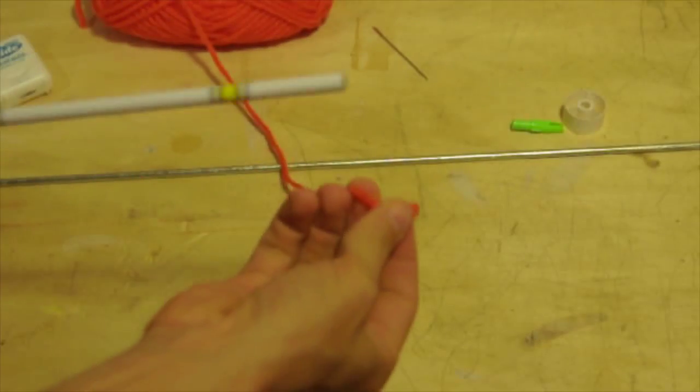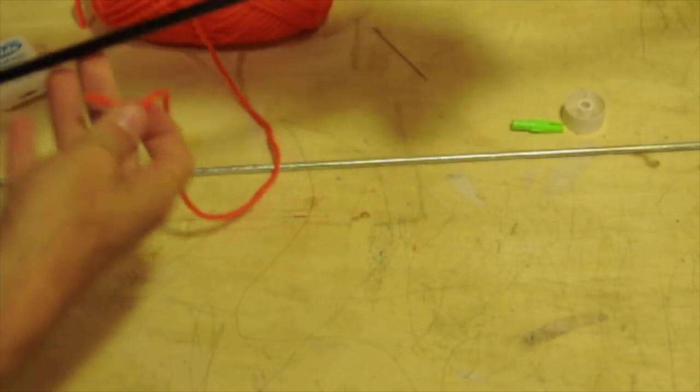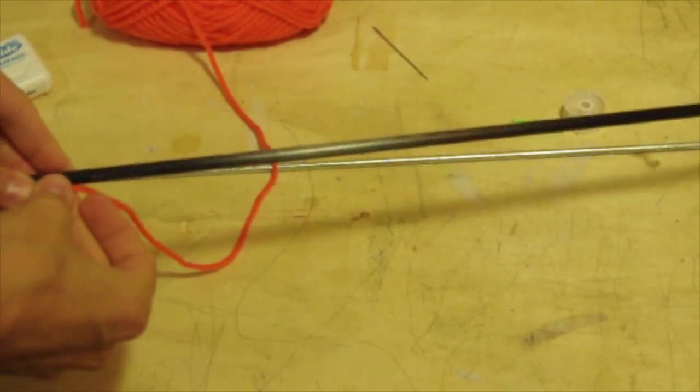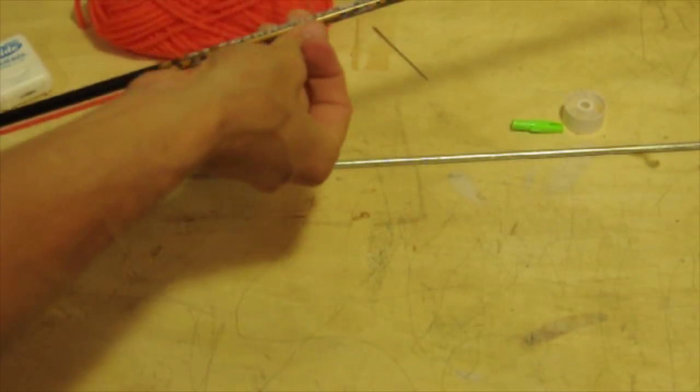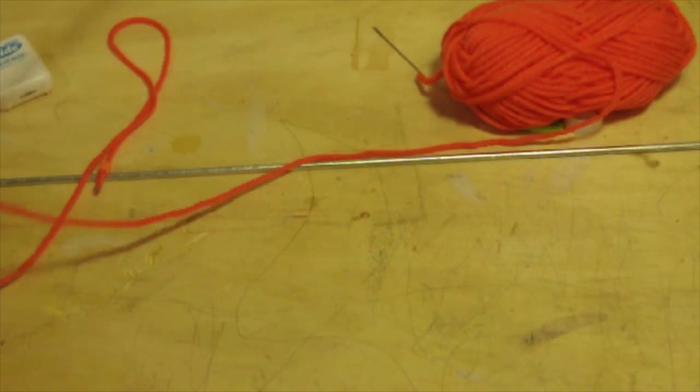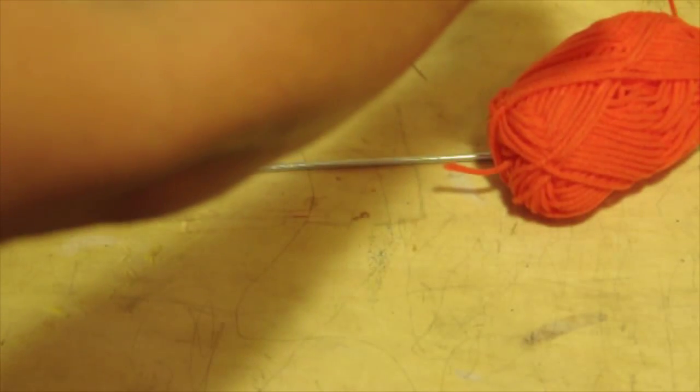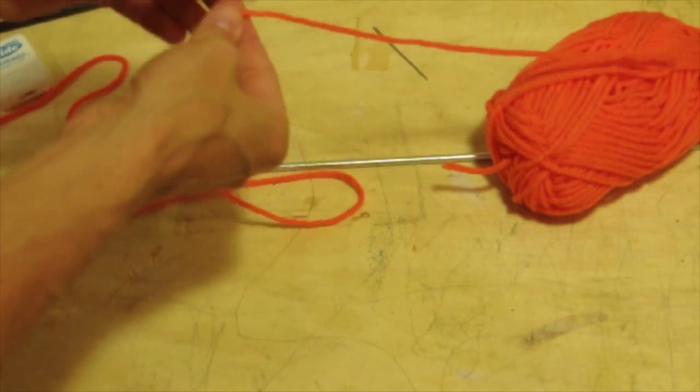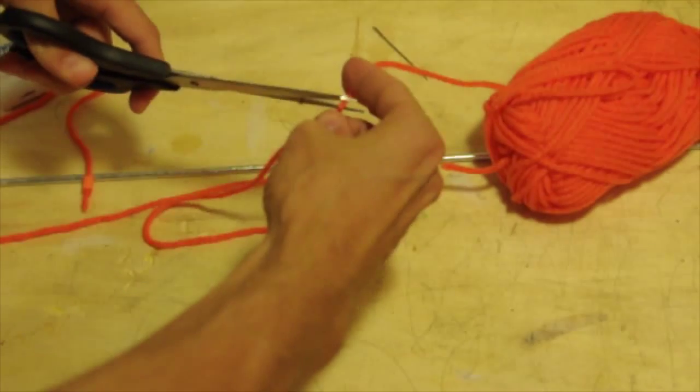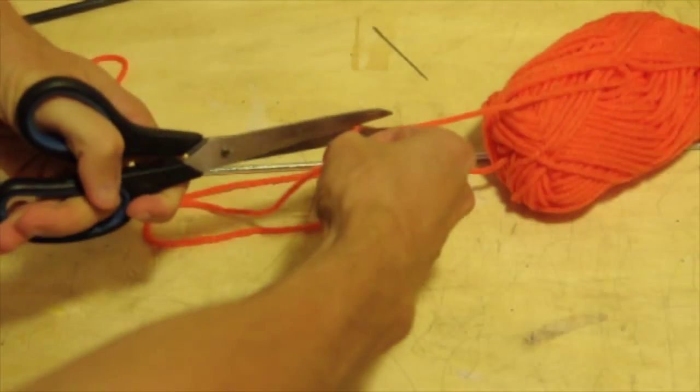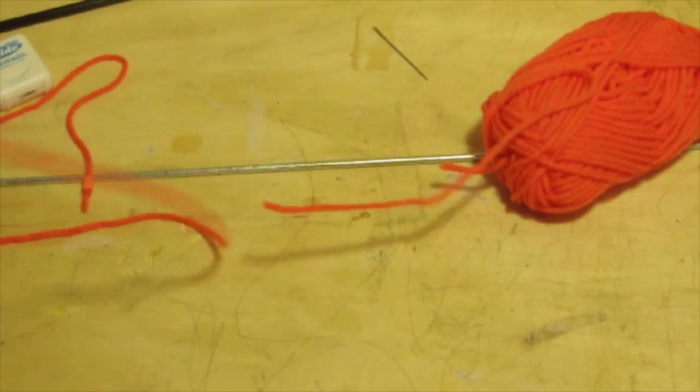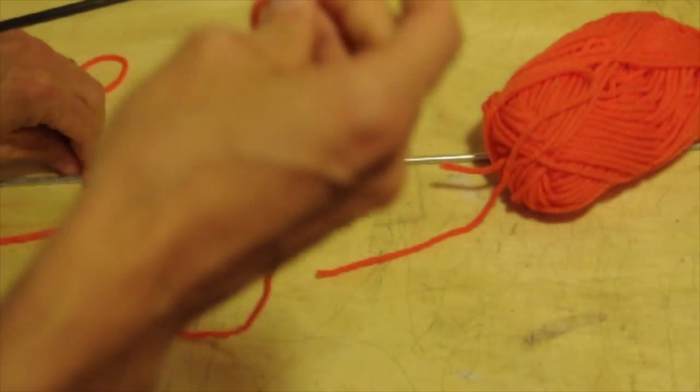So the next step is to measure out your yarn and give it a cut. I do two times the length of my arrow. You don't need much more than that. I've done three before, but three times the length of the arrow is difficult to get all that yarn into the arrow. The harder you have to push it in there, the harder it is for the yarn to deploy at the end.